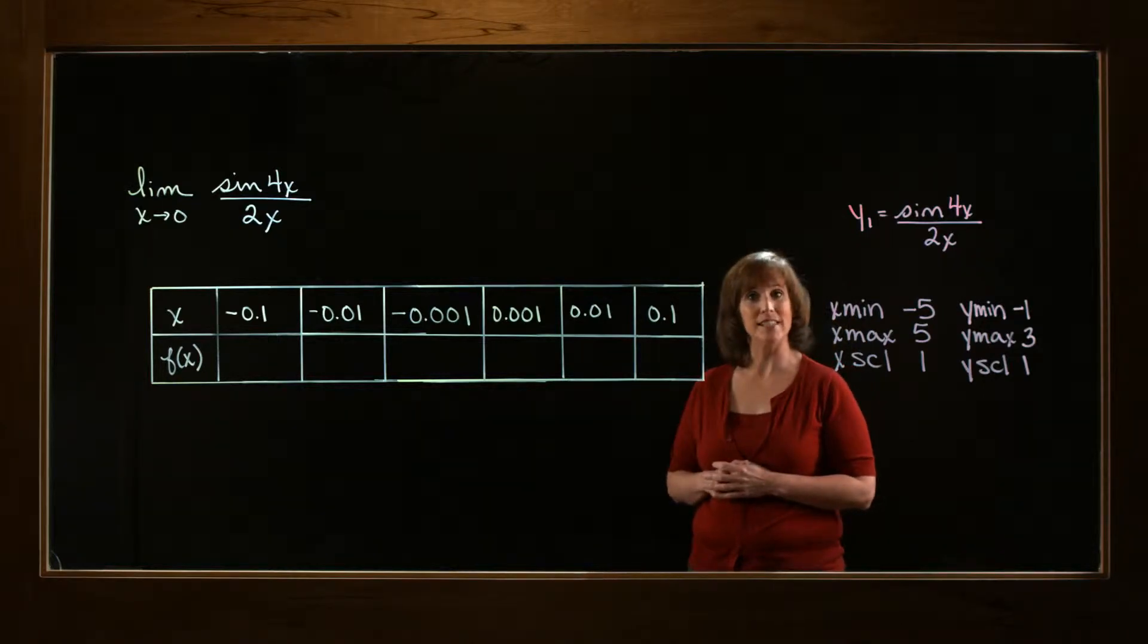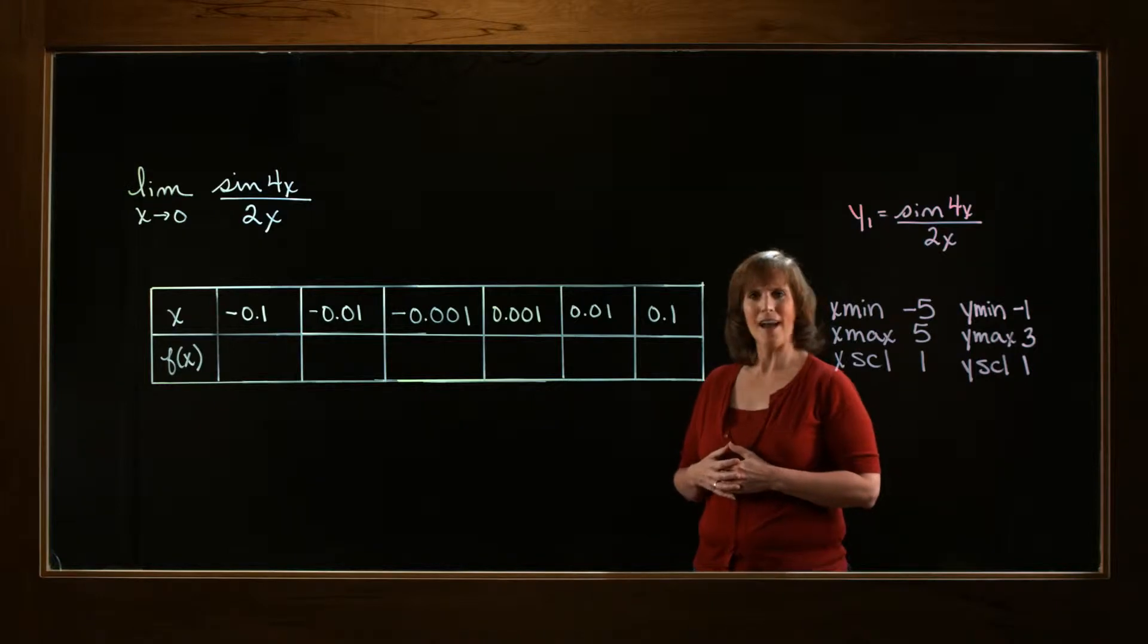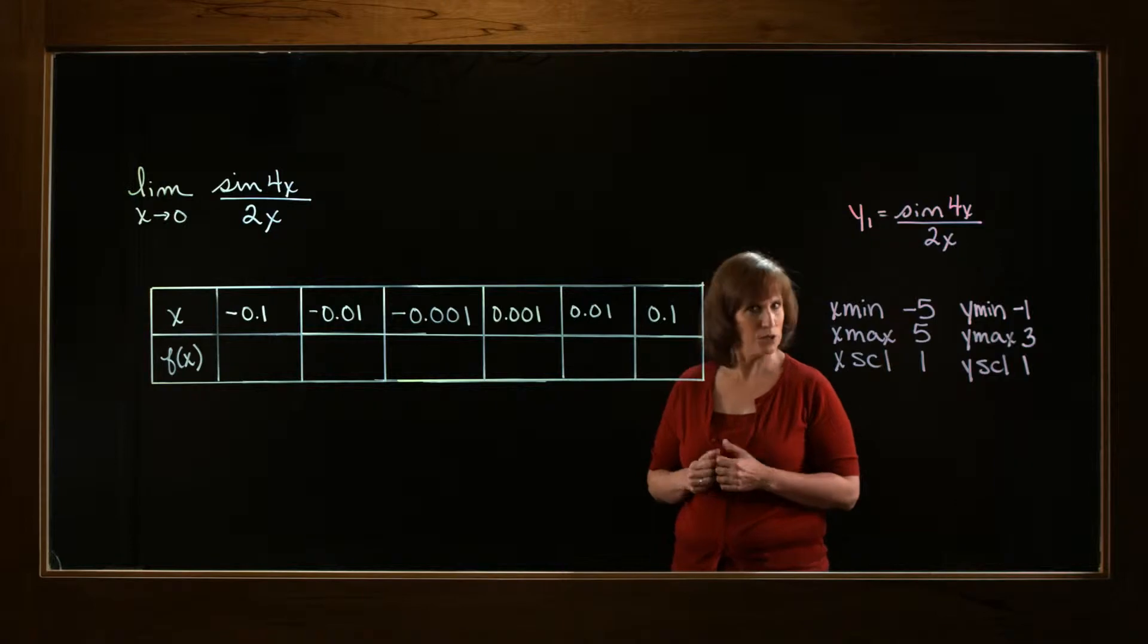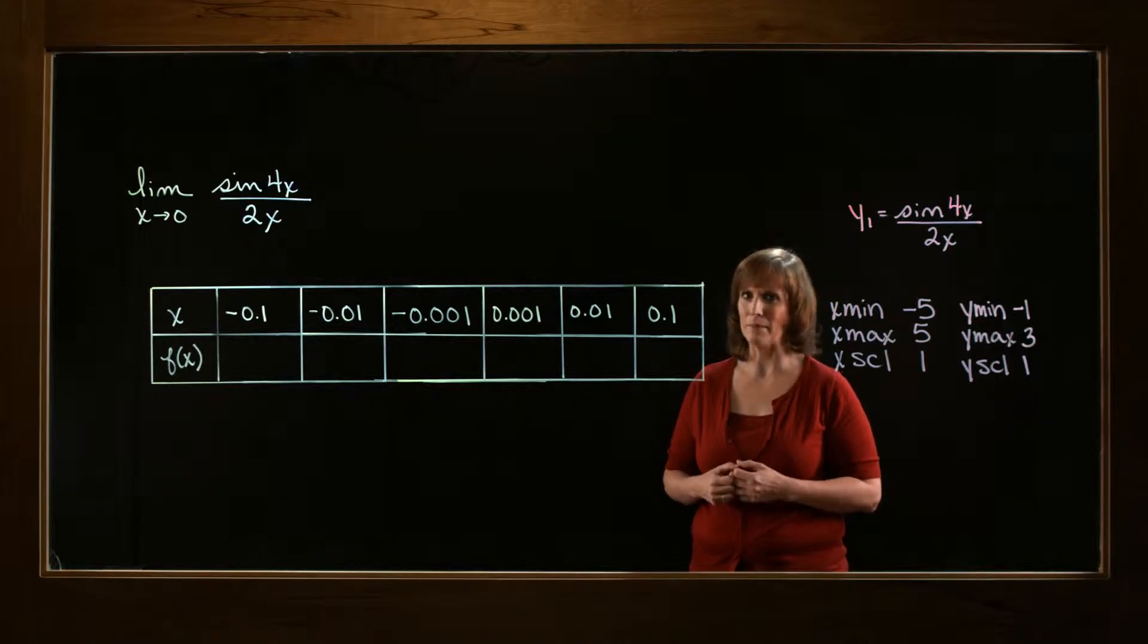I have the limit as x approaches 0 of the sine of 4x all over 2x. Now, if I try to do this analytically, I might try to just substitute in a 0. But if that happens, I've got the sine of 0, which is 0, over 0. 0 over 0 is an indeterminate form. I can't apply my basic limit laws.